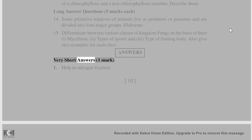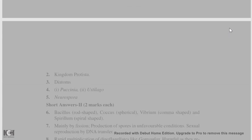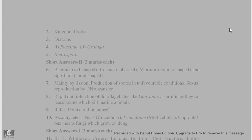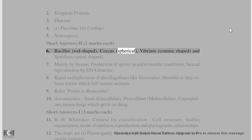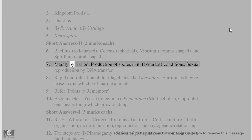Answers (1 mark): 1. Heterocysts help in nitrogen fixation. 2. Kingdom Protista. 3. Diatoms. 4. (i) Puccinia, (ii) Ustilago. 5. Neurospora. Short answers (2 marks): 6. Bacteria shapes — Bacillus (rod-shaped), Coccus (spherical), Vibrio (comma-shaped), and Spirillum (spiral-shaped). 7. Mainly by fission; production of spores in unfavorable conditions.